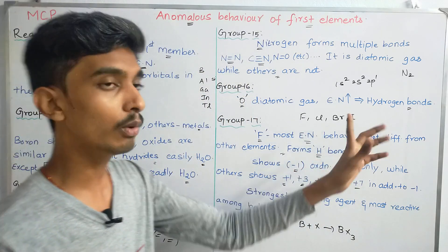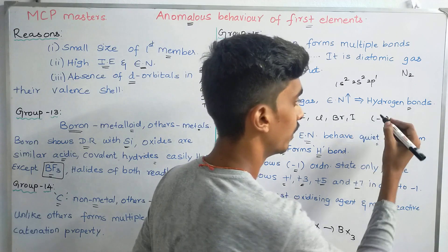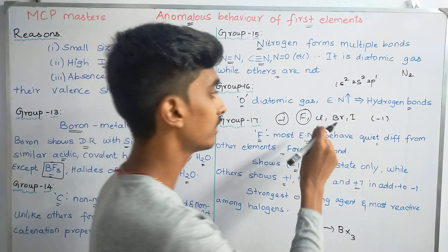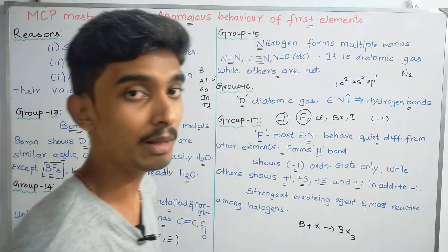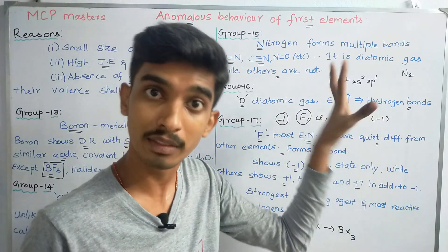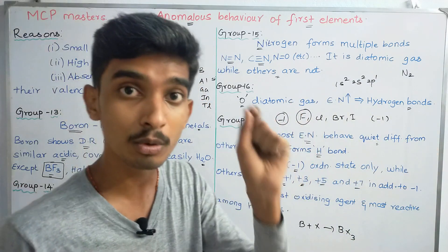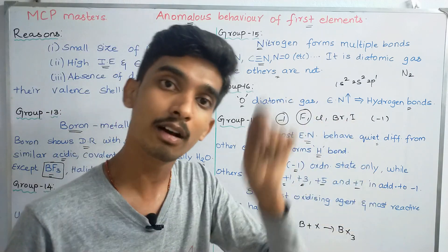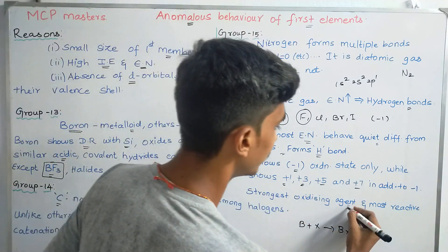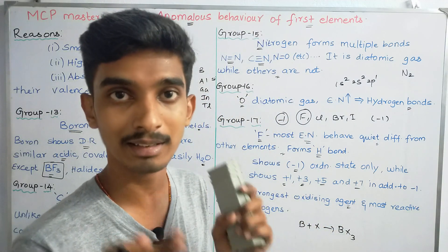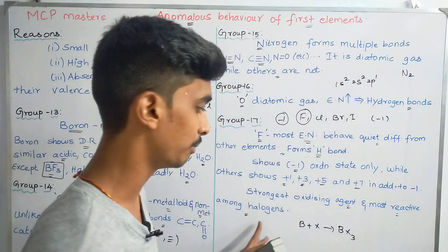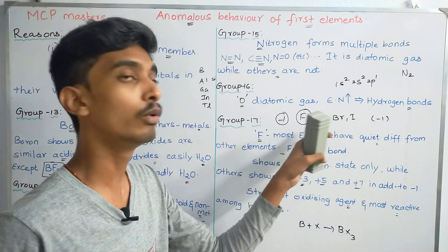The common oxidation state for all halogens is −1. But Fluorine only shows −1, while Chlorine, Bromine, and Iodine can also show +1, +3, +5, +7. Fluorine is also the strongest oxidizing agent and the most reactive among the halogens.